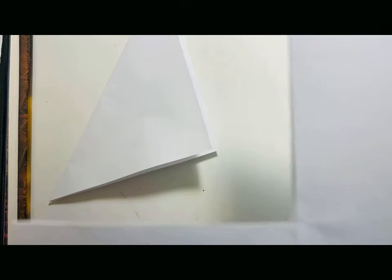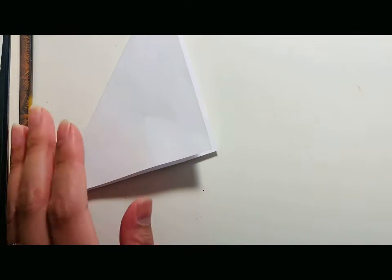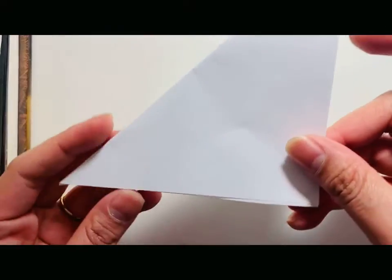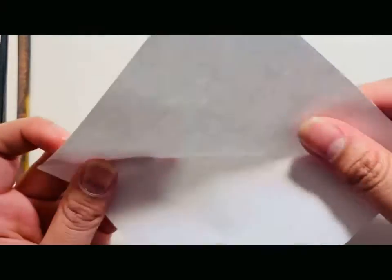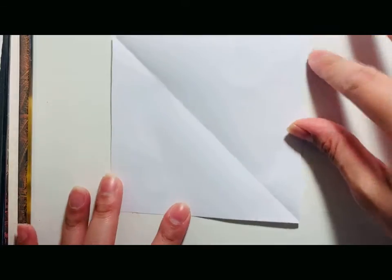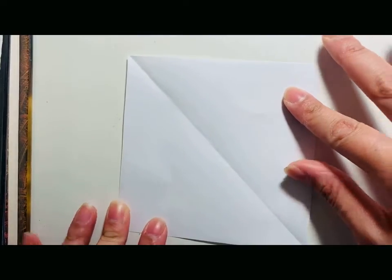So here we have the square which is already conveniently folded the way we want it to. And then we're just going to open it up and we have a perfect square.